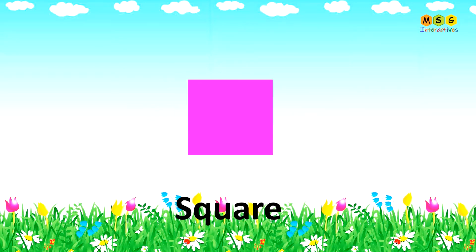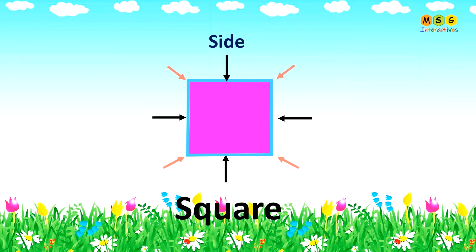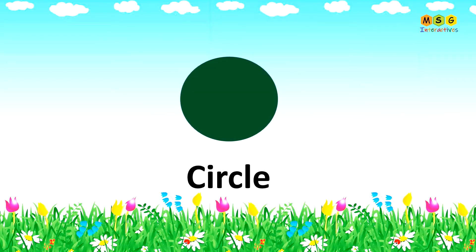Square: a square also has 4 sides and 4 corners. Circle: it is round. A circle does not have sides and corners.